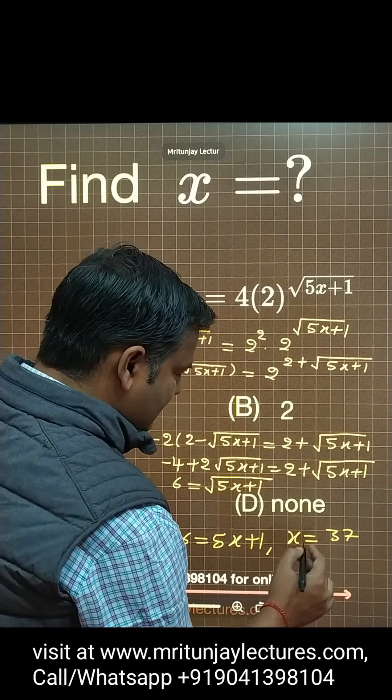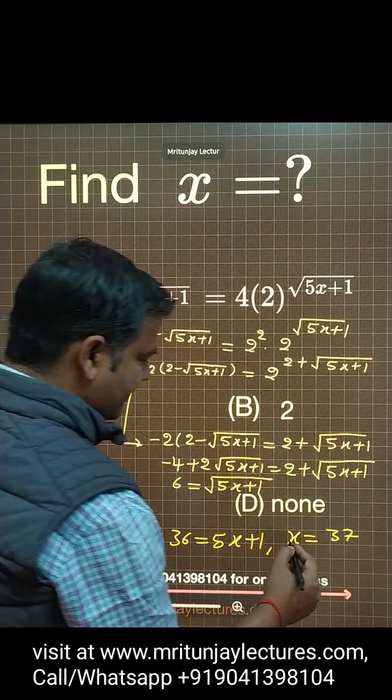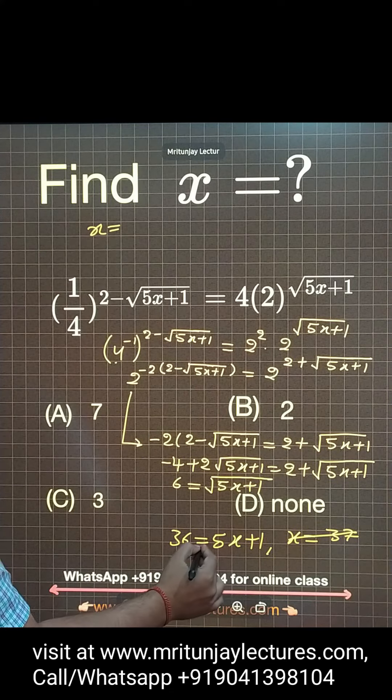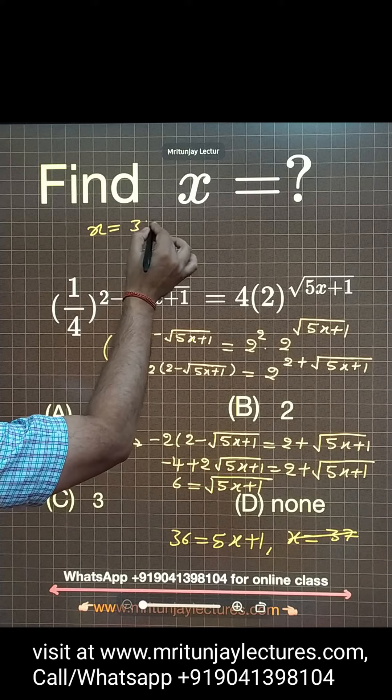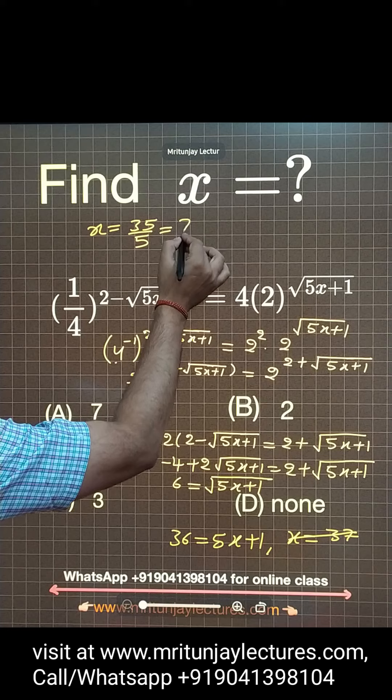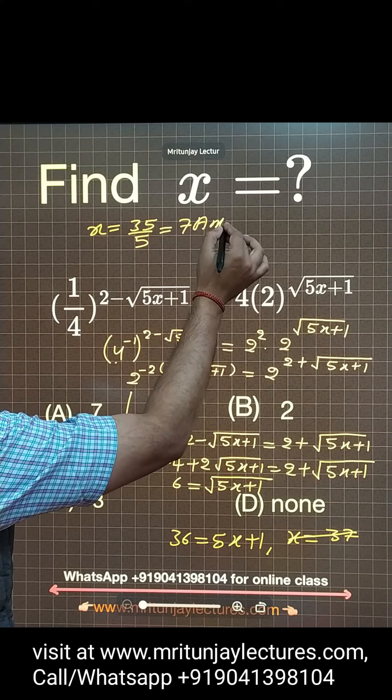Sorry, here plus, so not 37, that is 35. So x is equal to how much? 35 by 5. So we got 7. x is equal to 7.